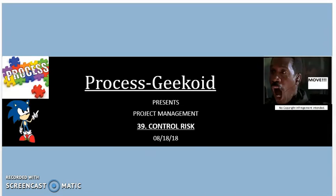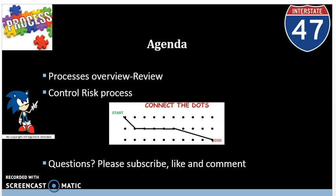Greetings everyone. Welcome to video number 42 in a project management series presented by Process Geekhoit. Today's agenda will be going over reviewing the PMBOK process table as well as the 39th process, which is the control risk process. This process occurs at the intersection of the risk knowledge area and the monitoring and controlling process group.